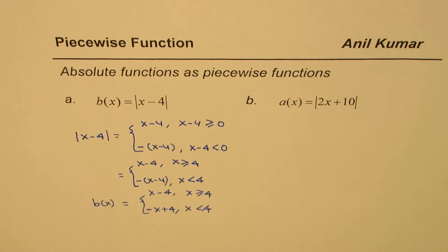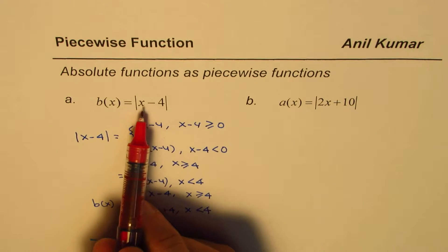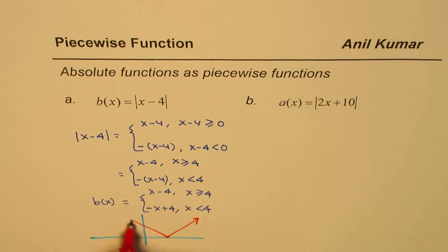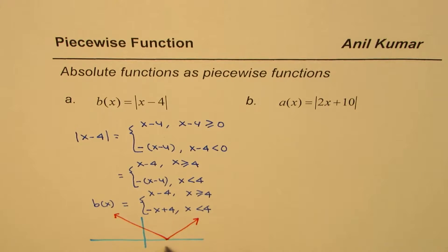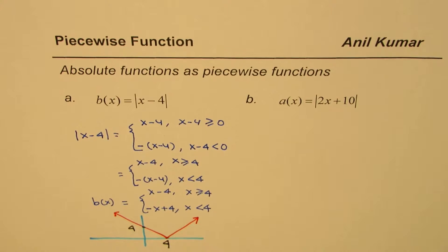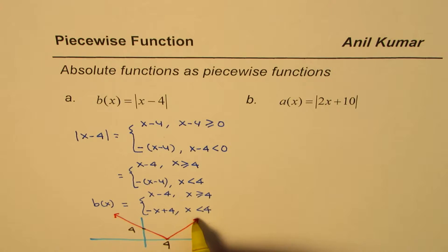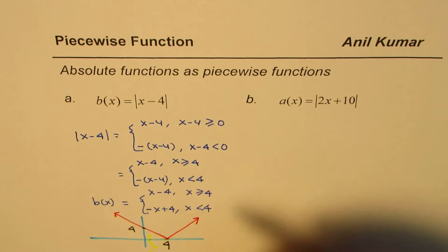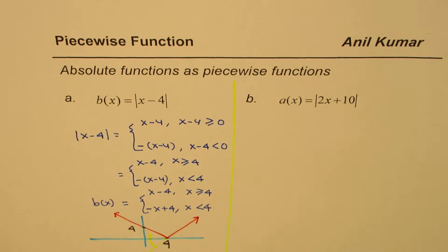If we sketch this function, it is an absolute function translated 4 units to the right — it looks like a V shape with the vertex at x = 4. If we substitute x = 0, we get 4, so the y-intercept is also 4. From the definition, if x is more than 4 it follows the line x minus 4; if x is less than 4, the line is reflected, giving us the full graph of |x - 4|.